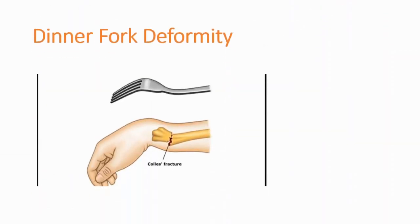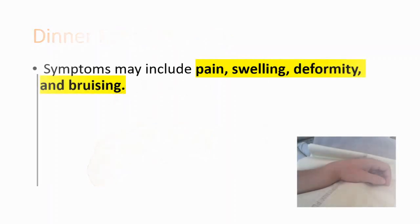On examination, you can see dinner fork deformity, which is seen in Colles Fracture. The symptoms may include pain, swelling, deformity, and bruising.